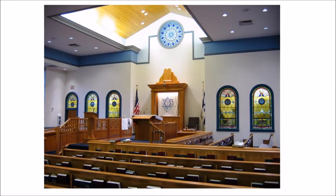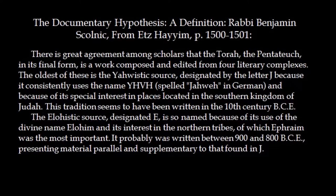There's a really good essay in the Chumash Eitz Chayim on the documentary hypothesis by Rabbi Benjamin Skolnick. He summarizes the essential definition of what's called the documentary hypothesis, which was developed in the 19th century by a German Protestant Bible scholar named Wellhausen. He calls it four literary complexes, referred to as J, E, P, and D.